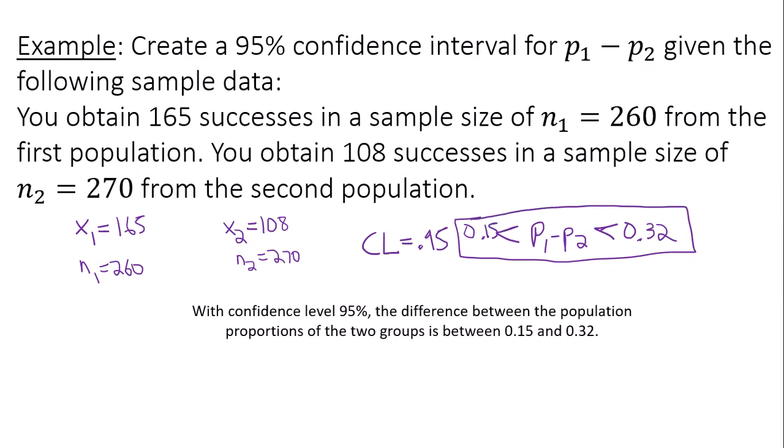To interpret it we say that with confidence level 95% the difference between the population proportions of the two groups is between 0.15 and 0.32.